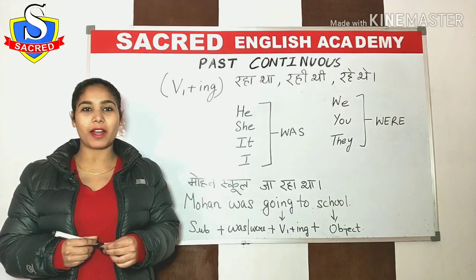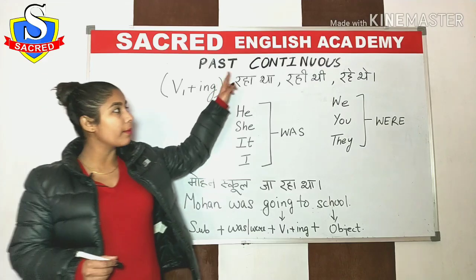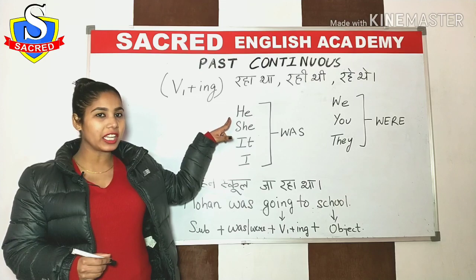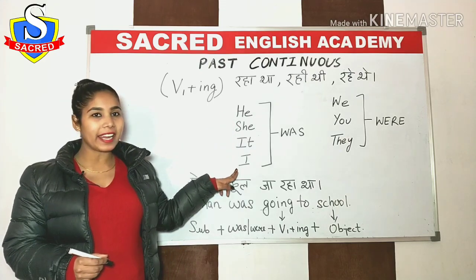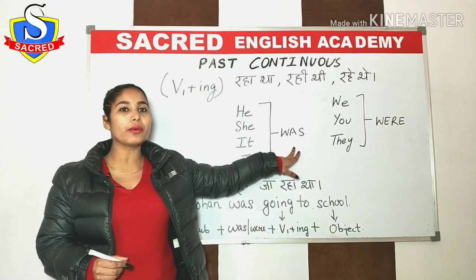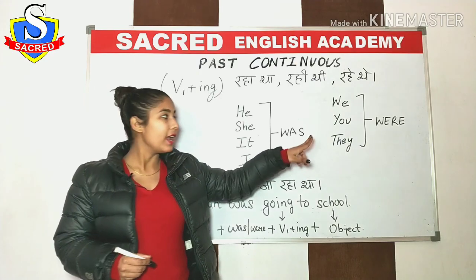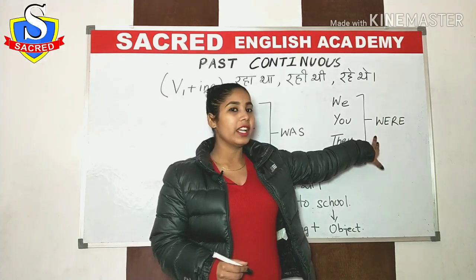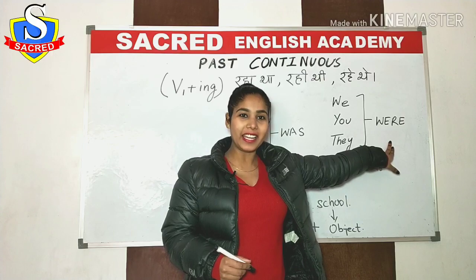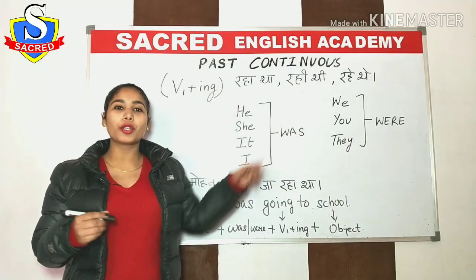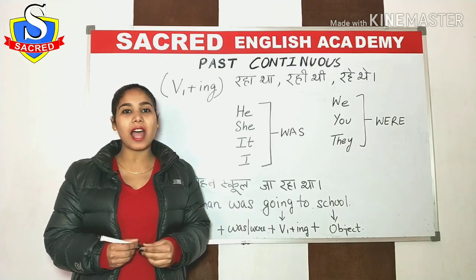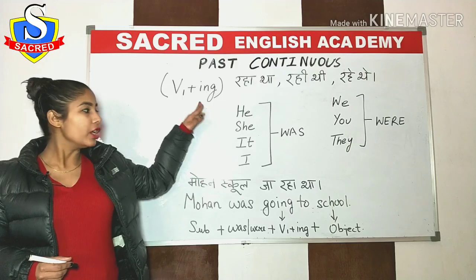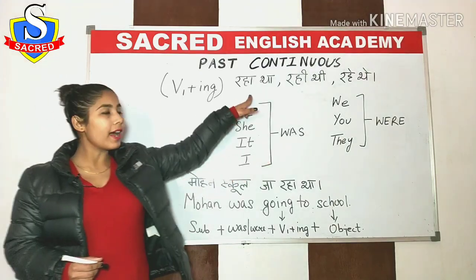Now let's move to the rules of past continuous tense. With he, she, it, and I, you have to use 'was' — W-A-S. With we, you, and they, you have to use 'were' — W-E-R-E. Both 'was' and 'were' belong to the past. Along with these, you add the verb's first form plus -ing.